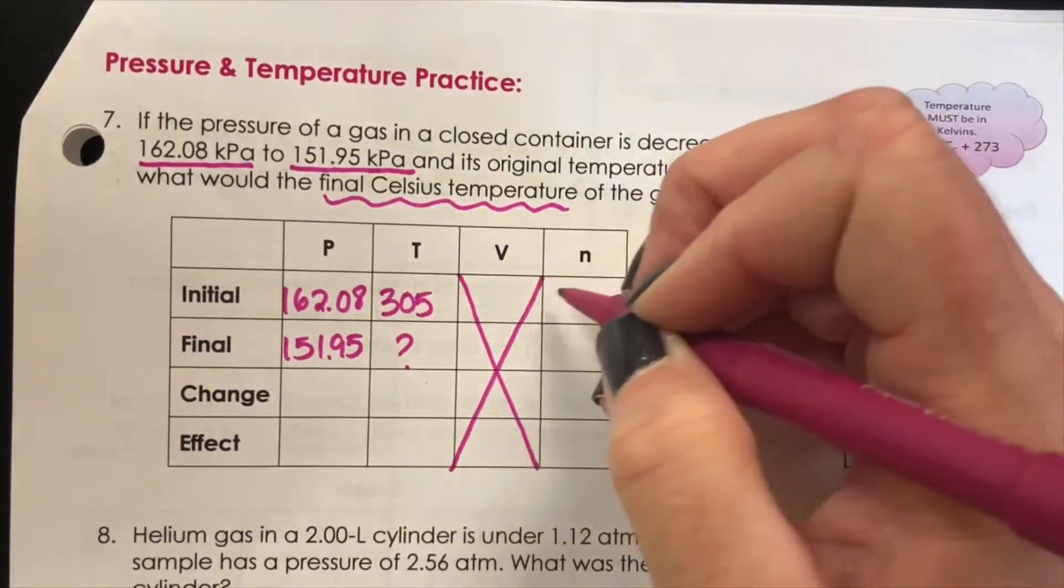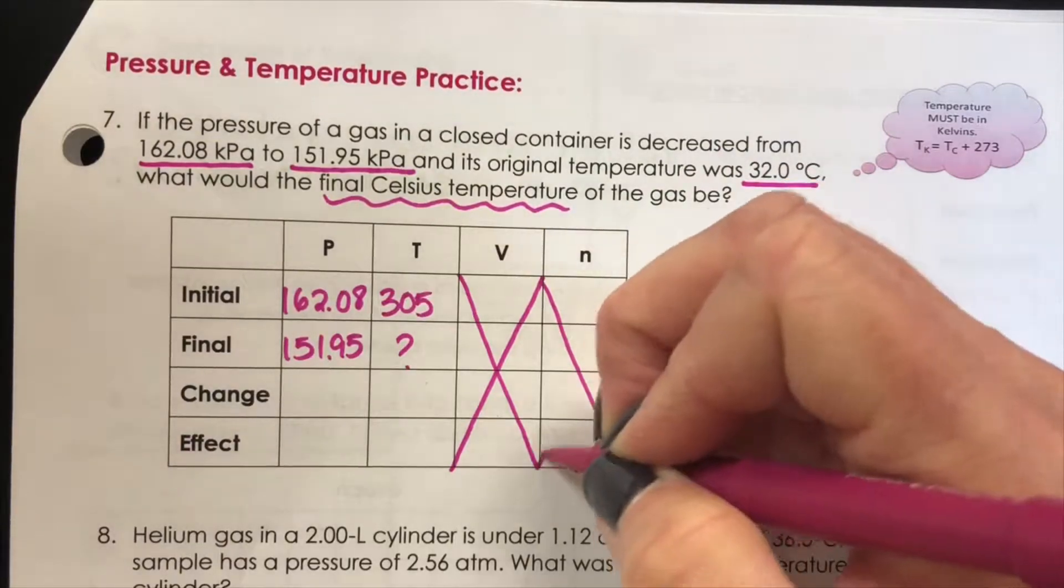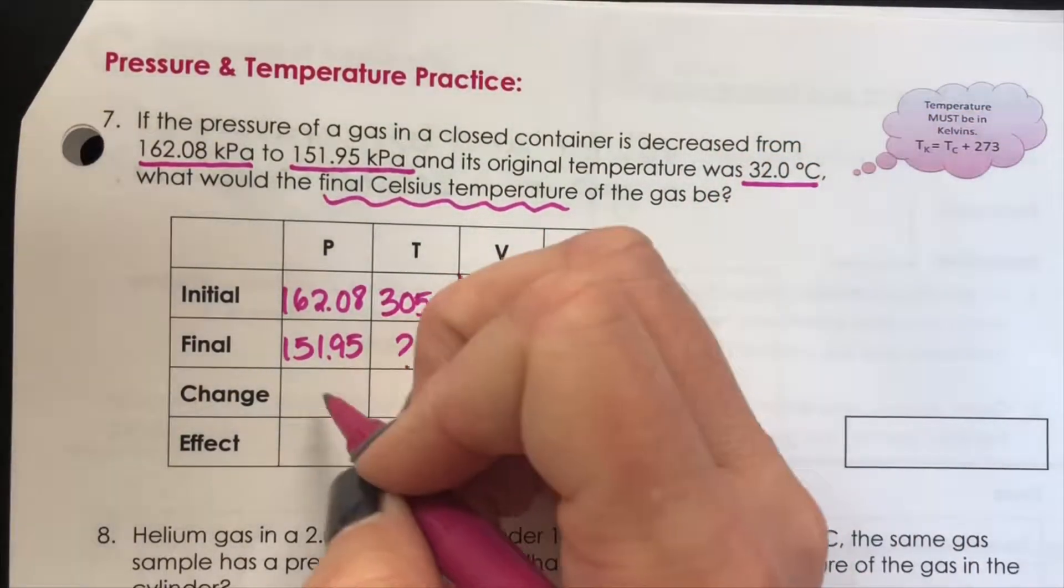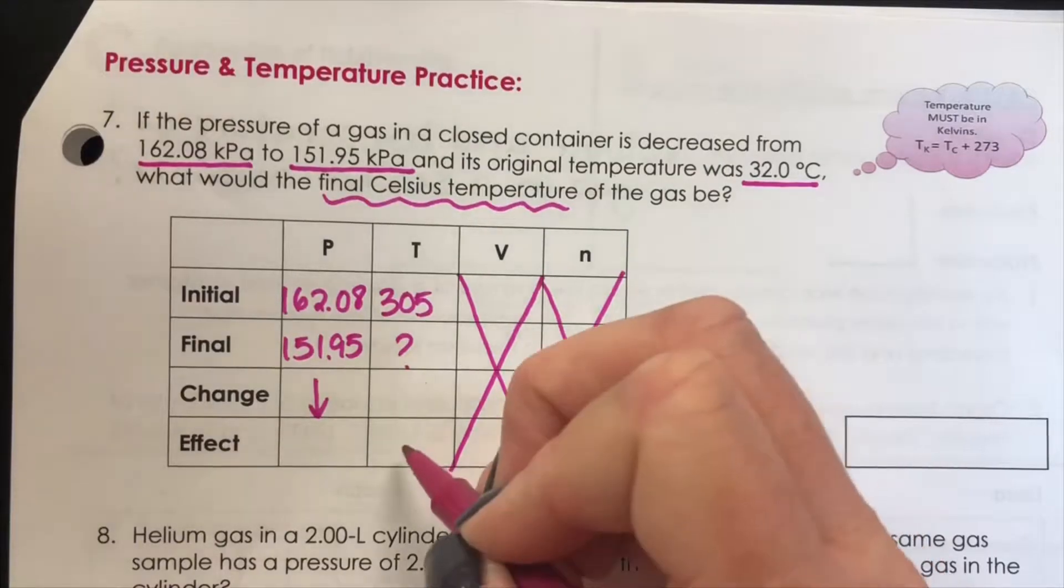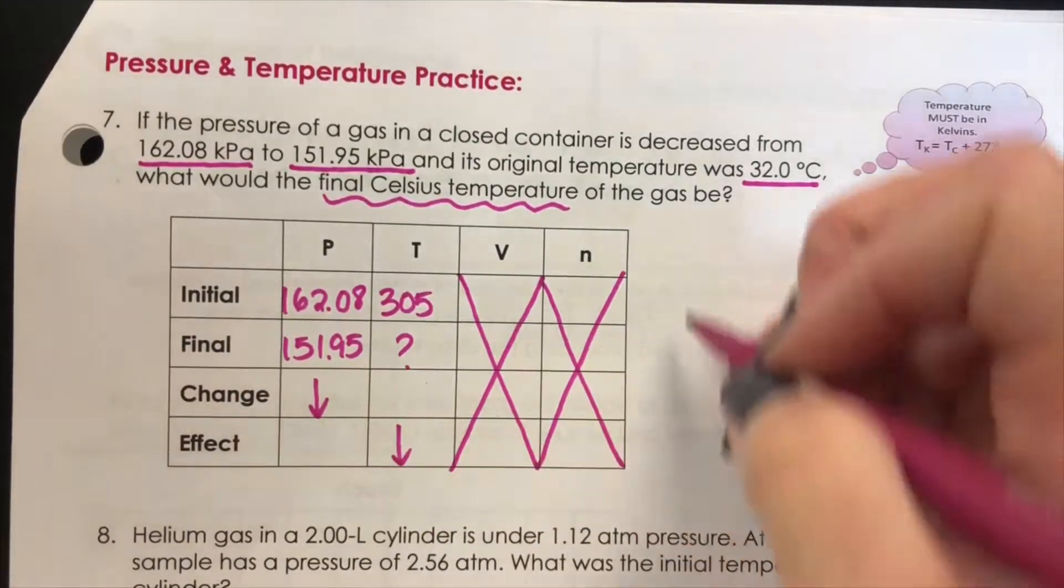Volume isn't mentioned so we assume that to be constant as our number of moles. Our pressure values decrease, according to our gas laws, the temperature would decrease as well.